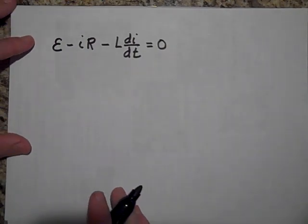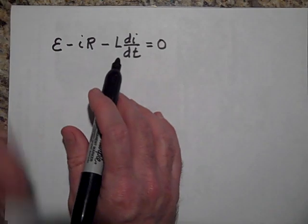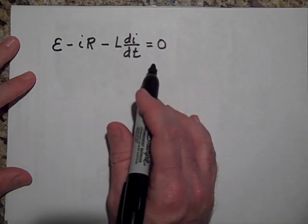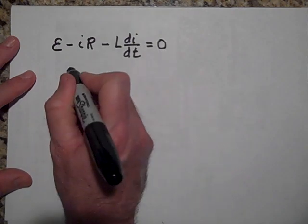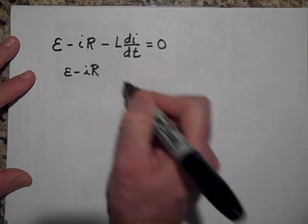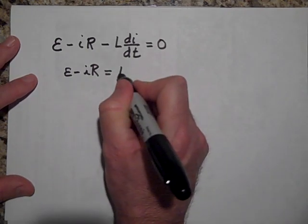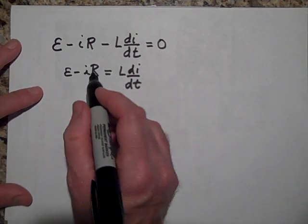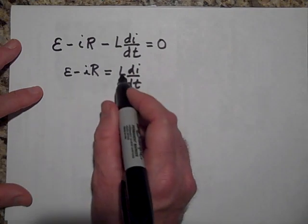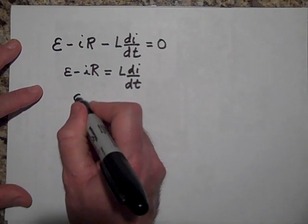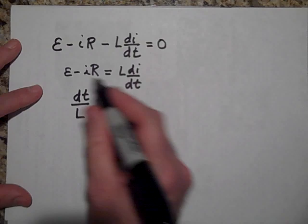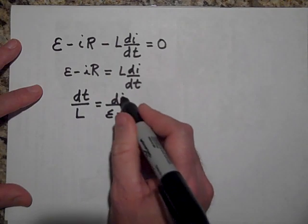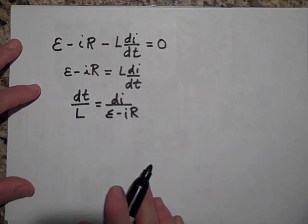To solve for I and get a function for how I varies with time, I'm going to separate my terms - get terms with I on one side and dt on the other. Bringing the resistor and inductor terms over: E minus IR equals L·dI/dt. Now I switch things around, bringing dt over here and the whole expression underneath, and L on the other side: dt over L equals dI over (E minus IR). Now I have dI with my I terms together.